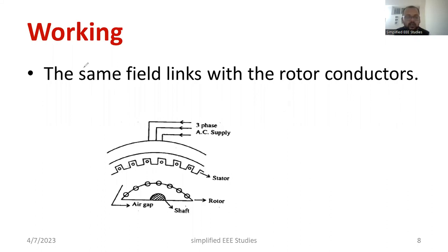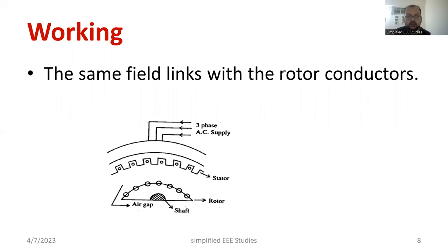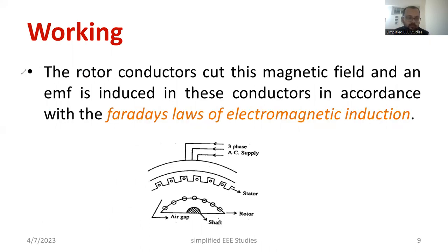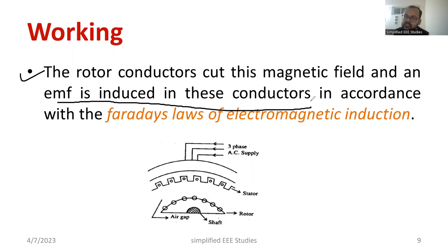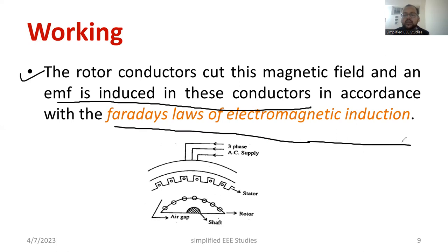Whatever magnetic field is produced as soon as you apply the three-phase supply, that is going to link with the rotor conductor. The rotor conductor is made up of copper. The magnetic field is interacting with the rotor conductor — the rotor conductor cuts the magnetic field. Because of Faraday's law of electromagnetic induction, an EMF is produced at the rotor conductor. The flux change takes place, resulting in flux linkage, and due to the flux linkage an EMF is produced. The formula is E proportional to N into dφ/dt.